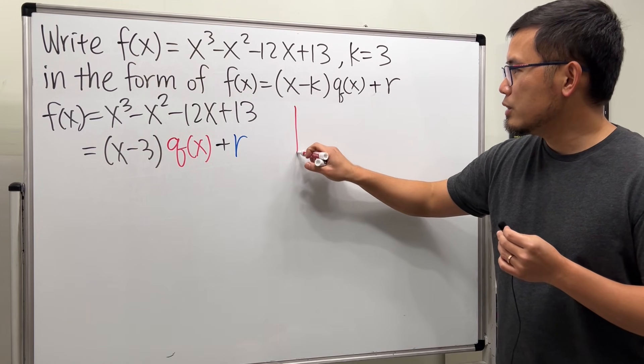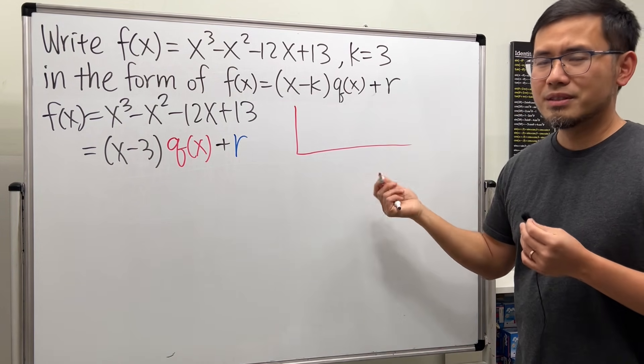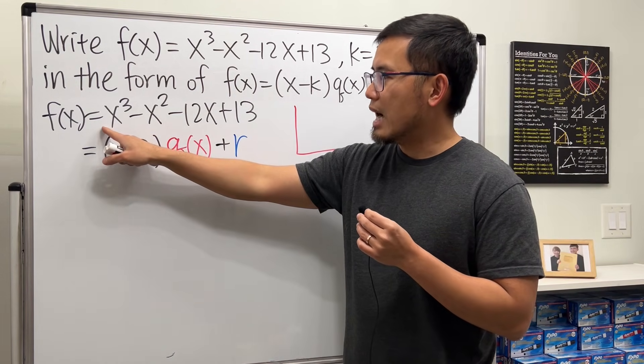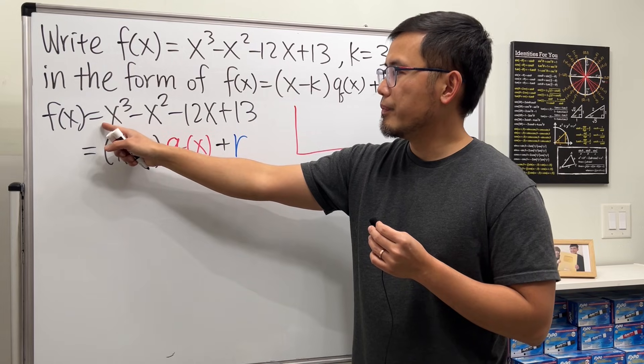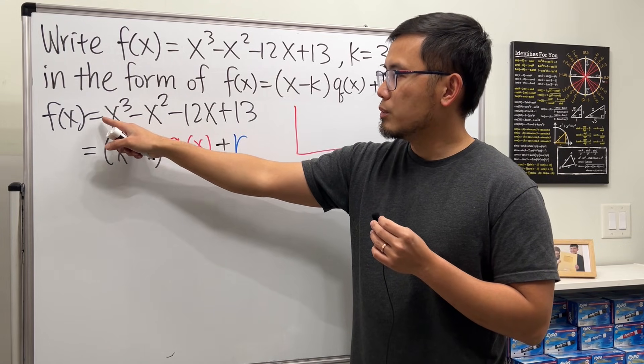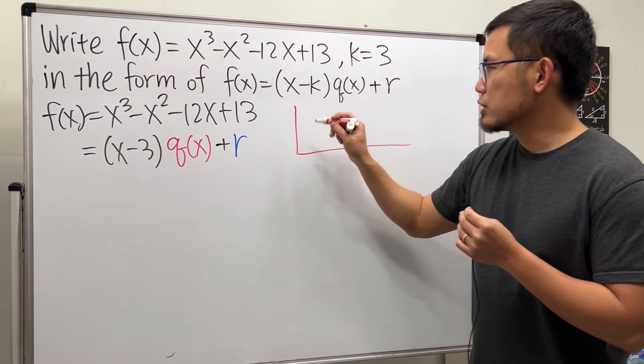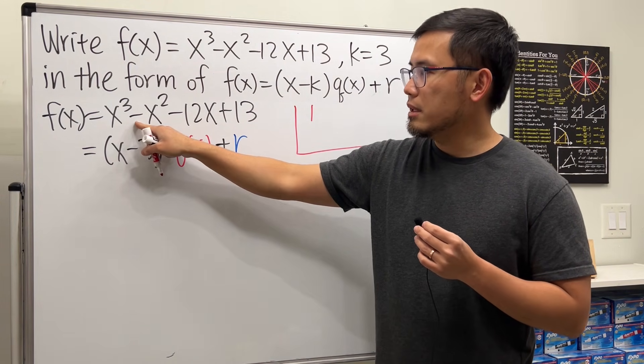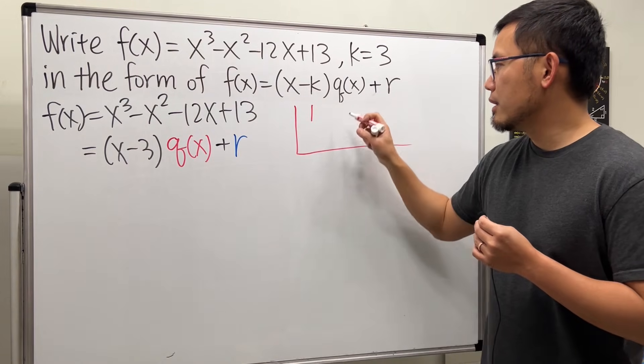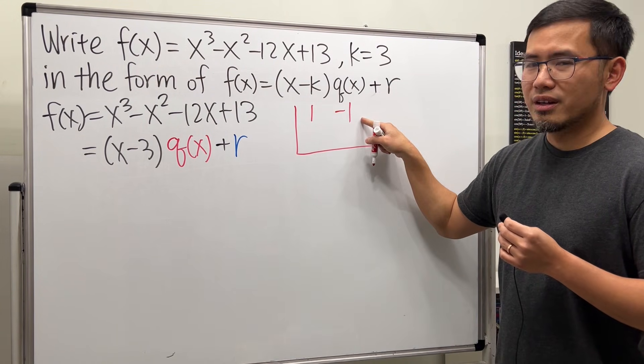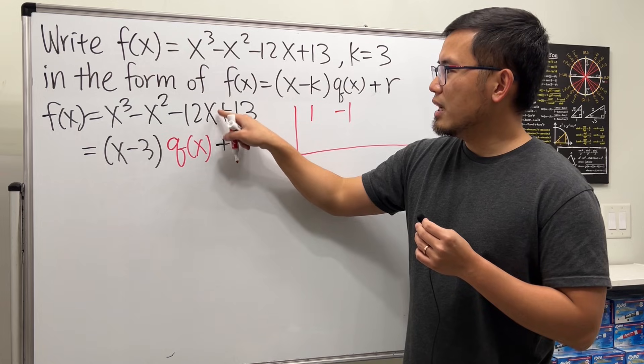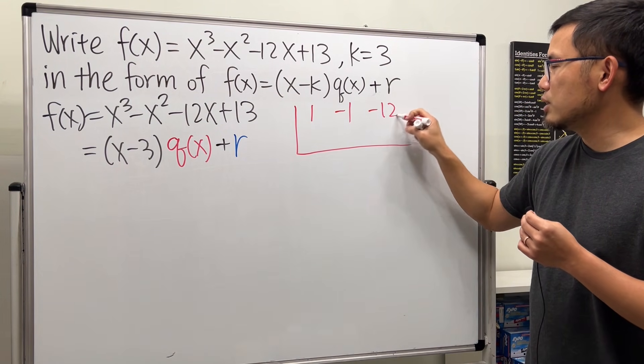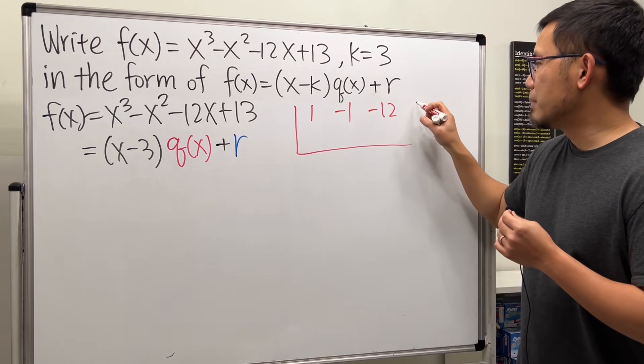Come right here, and then start with like a left box like this. This is how I set it up. And you are going to write down the coefficients of this right here first. Starting at 1, right? Because of 1x cubed. So just put the 1 right here. And then the next coefficient is negative 1x squared. So negative 1. You don't have to put a comma. Just leave a space right here. And then next, we have the x to the first power here. And the coefficient is negative 12. So I'll just come here and write down negative 12. And lastly, we have positive 13.